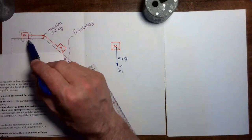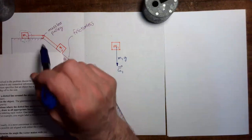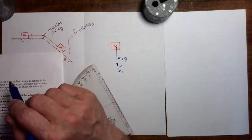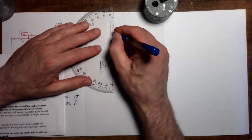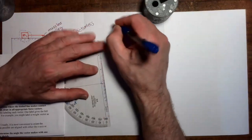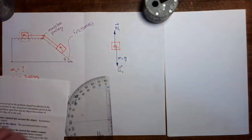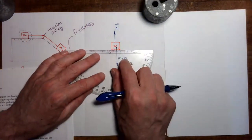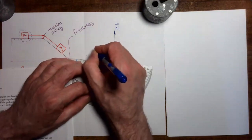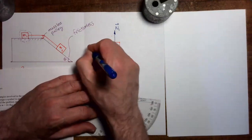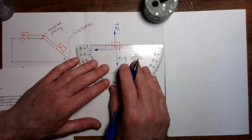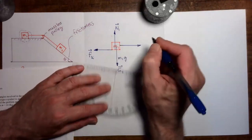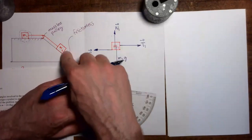Going around the dashed line, we see where things reach through to exert forces on mass 1. The horizontal surface exerts a normal force, which we label N1. The horizontal surface also exerts a kinetic friction force on mass 1 pointing back to the left, labeled Fk. Then the string reaches in to pull on mass 1, so we put in the tension force pointing to the right, called tension force T1.